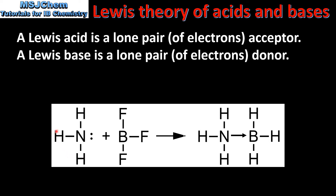Here we have the reaction of NH3, which is ammonia, and BF3, which is boron trifluoride. NH3 has a lone pair of electrons, and boron trifluoride has an incomplete octet, which means it only has 6 electrons in its valence shell.